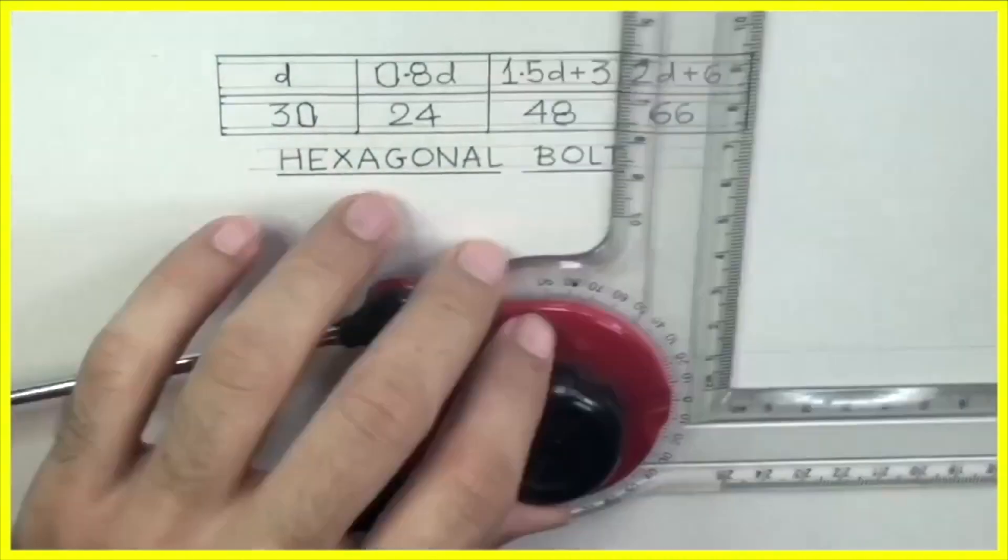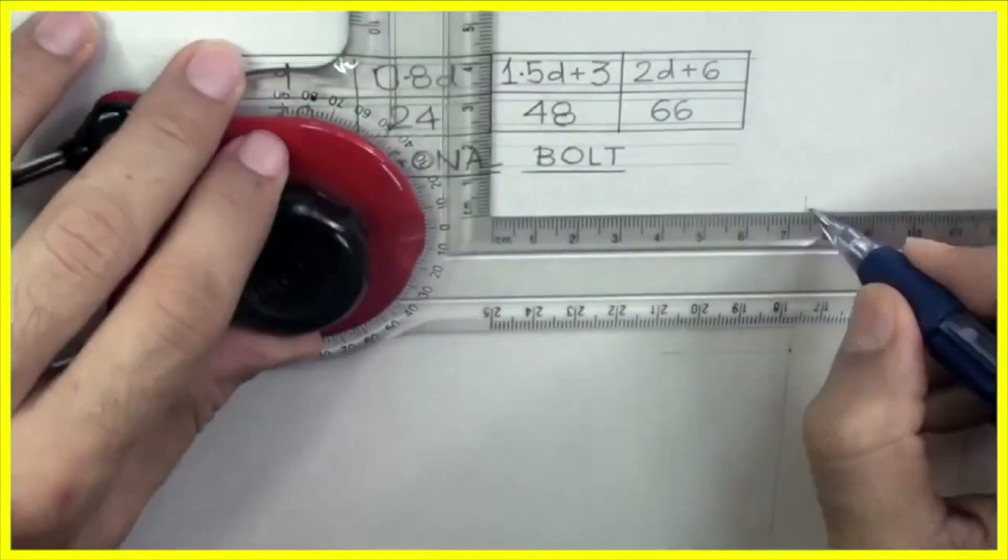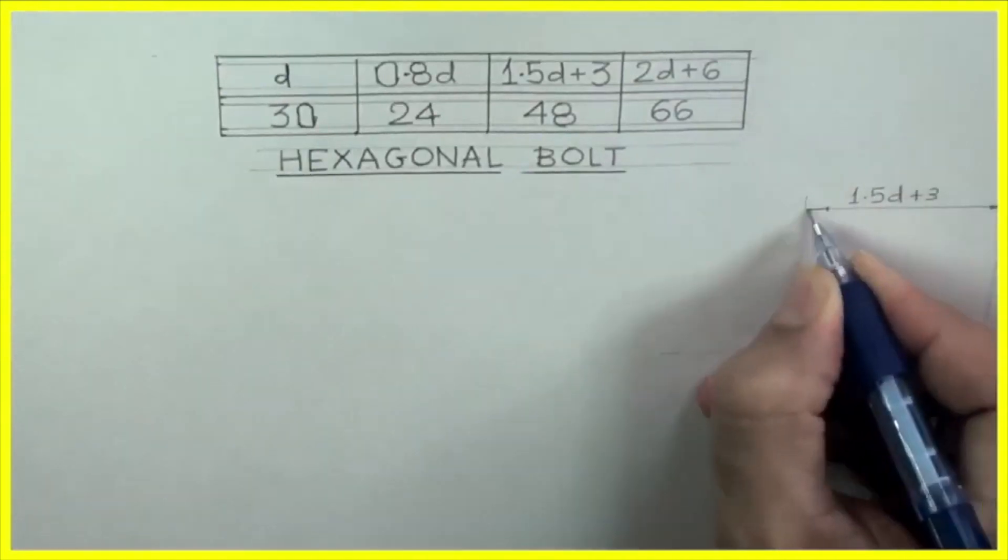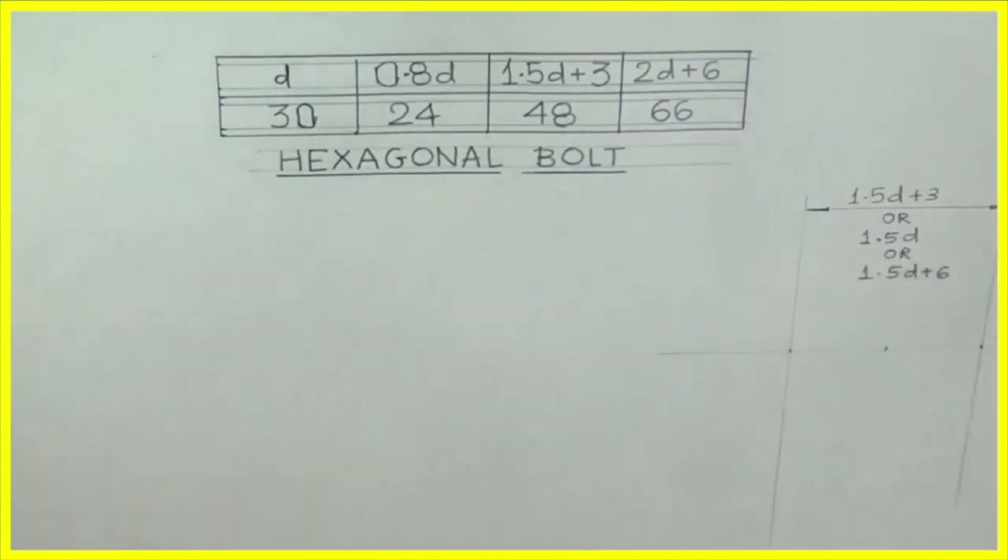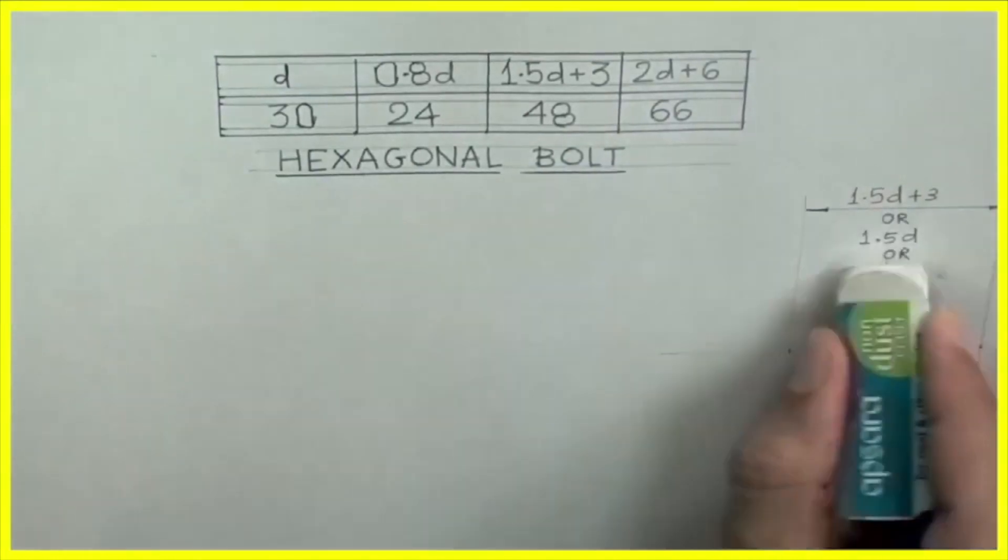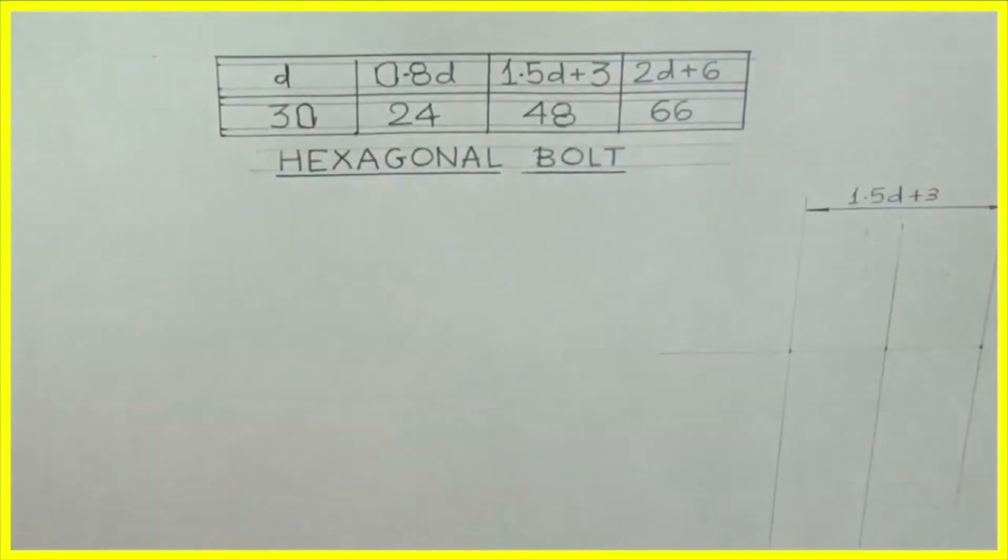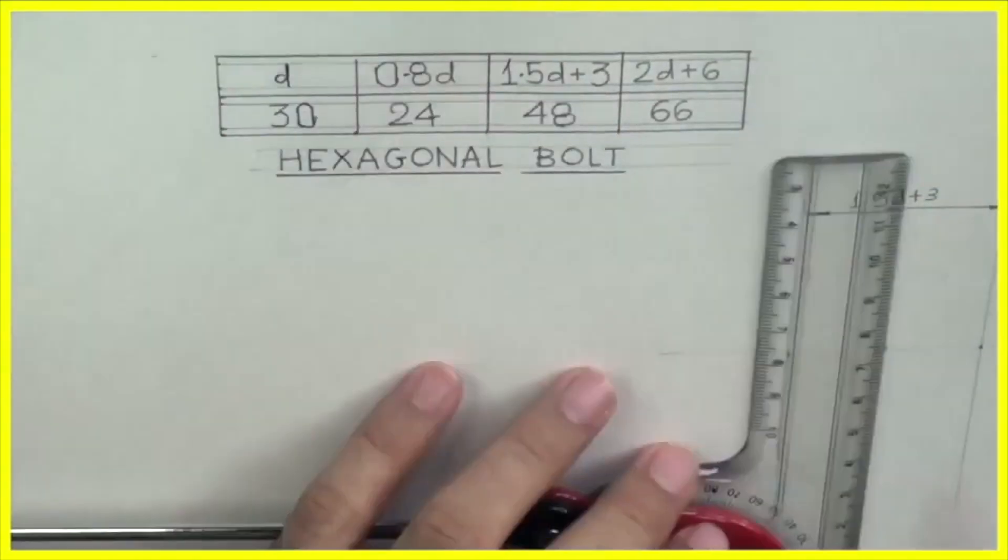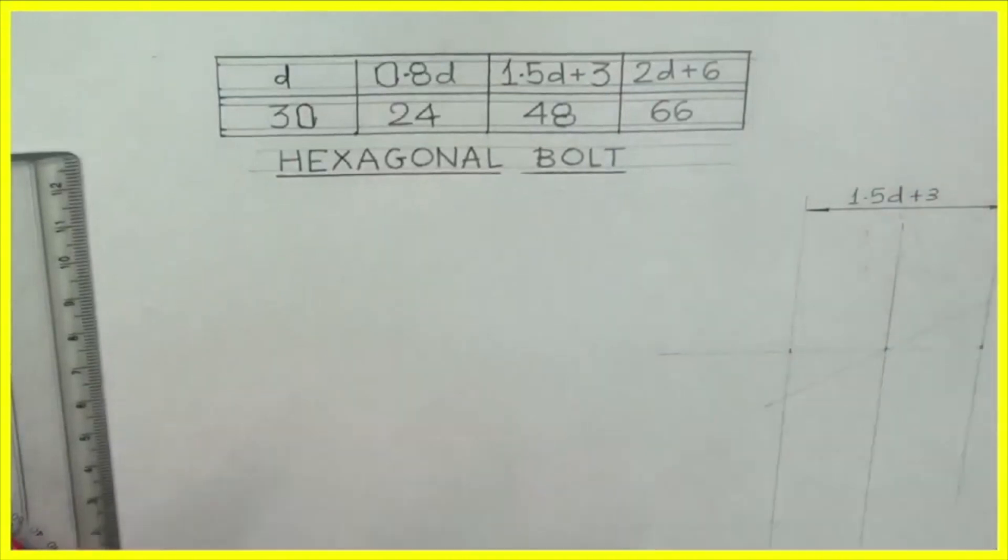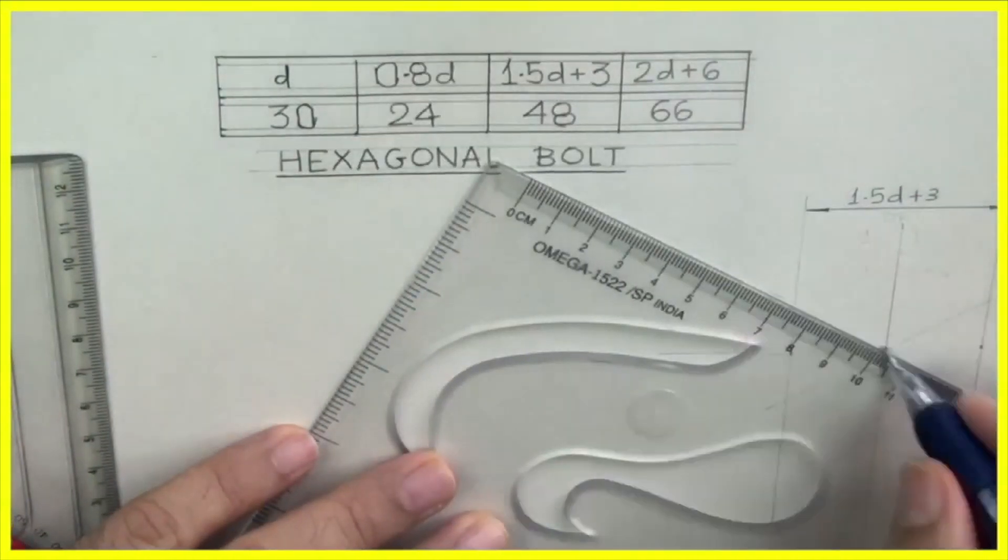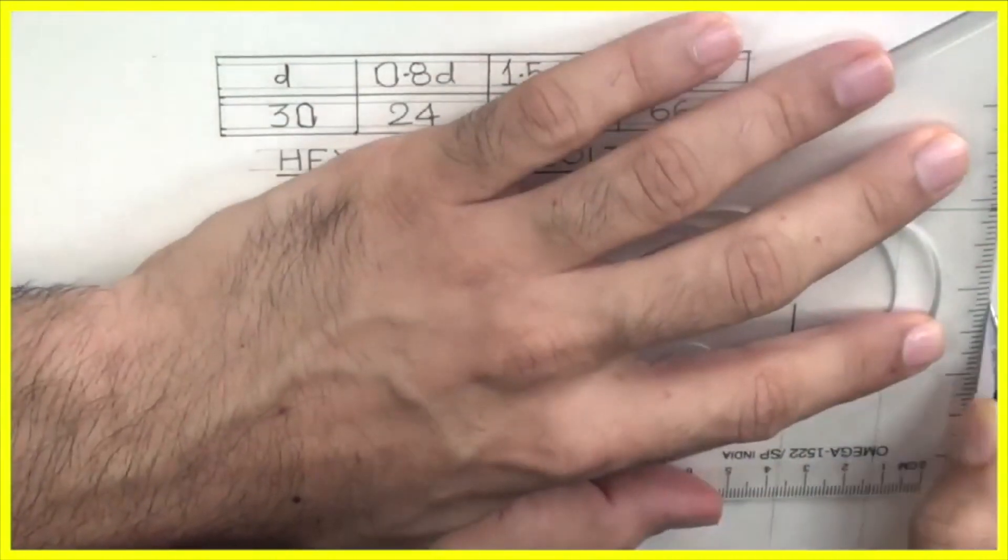First we will start with the hexagon because the axis is parallel to HP and VP both, so side view will give you the true shape. We have to draw hexagon across flat. We'll take 1.5d plus 3. Then you divide into two parts and you draw 30 degree. Take 30 degree set square and draw this vertical line. This is the side of the hexagon.